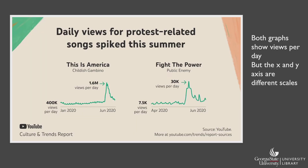A good tip for checking for misleading graphs is to look at the axes. The graphs shown in this visual from YouTube do not have labeled y-axes. This is a common faux pas in data visualization. If you look at the labels for each graph, you can see that their y-axes are based on different scales. While this makes sense for the intention of showing that protest-related songs spiked during the summer of 2020, it could be confusing for the viewer.